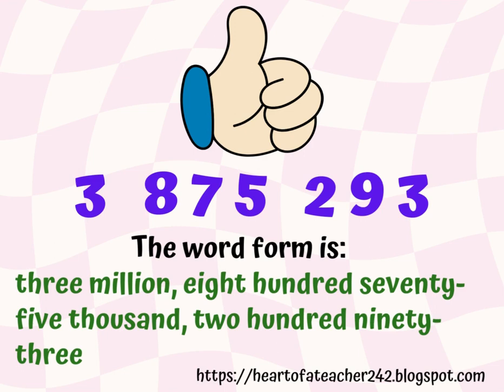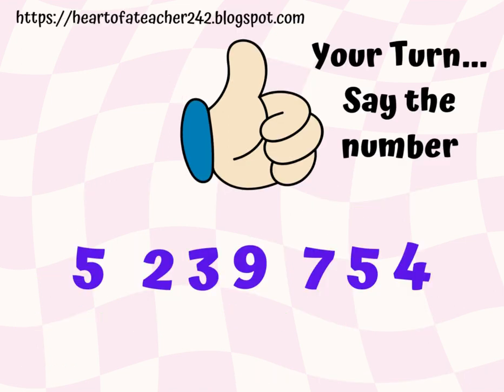So the word form for this number is three million, eight hundred seventy-five thousand, two hundred ninety-three. Now you can pause the video so that you can figure out how you would read and write this number. If you're ready to go on and see what answer I came up with, you can keep the video playing.